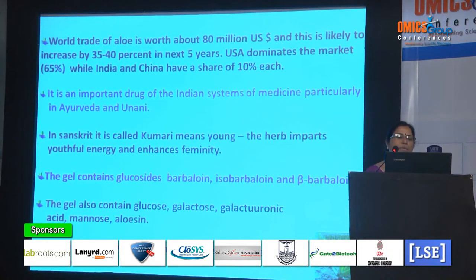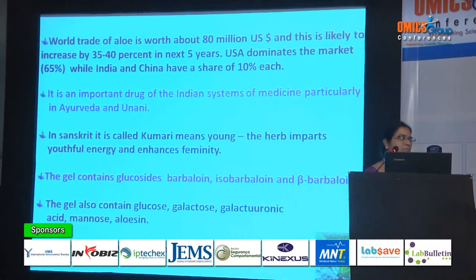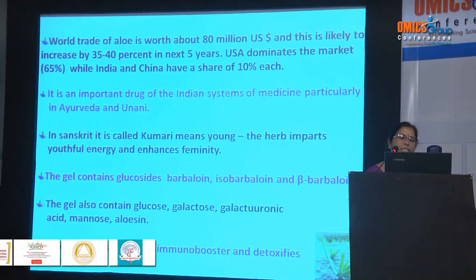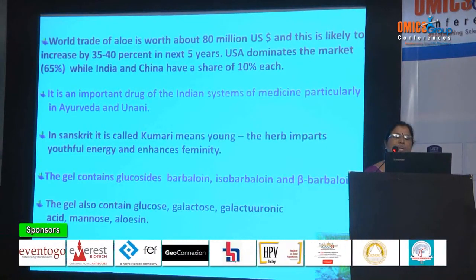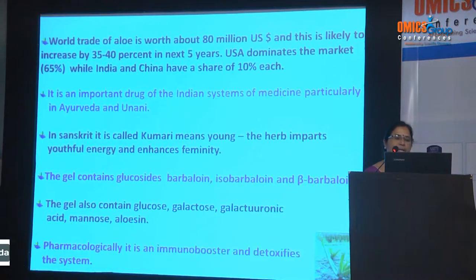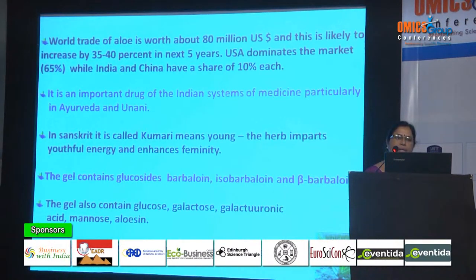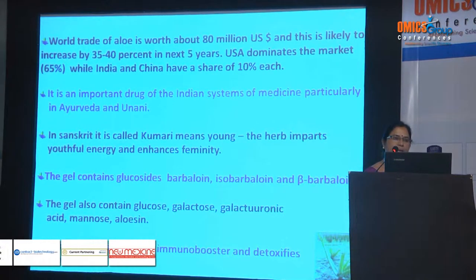USA dominates the market with 65% share, while India and China have a share of 10% each. It is an important drug of the Indian systems of medicine, particularly in Ayurveda and Yunani. In Sanskrit, it is called Kumari because it imparts youthfulness and enhances immunity. The gel contains glucosides — barbaloin, isobarbaloin, and beta-barbaloin — as well as glucose, galactose, galacturonic acid, mannose, and aloesin.